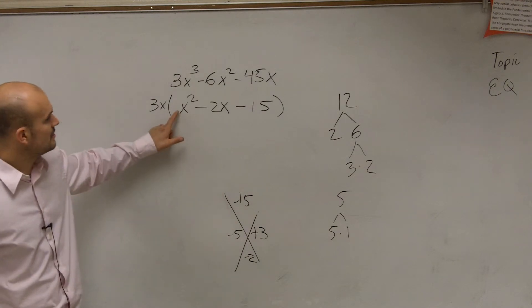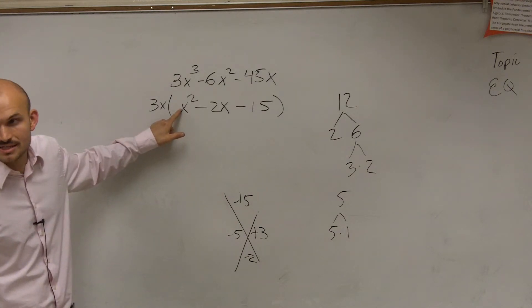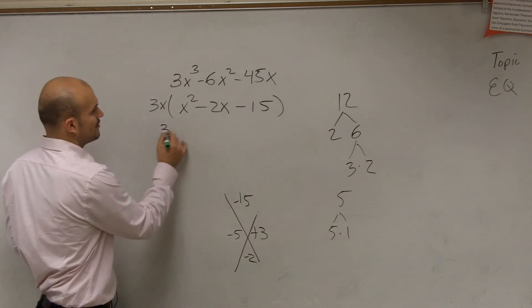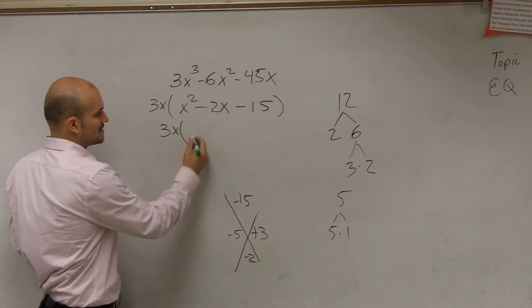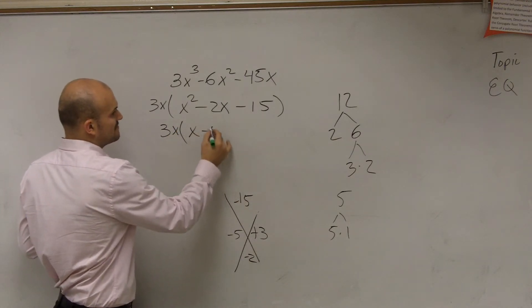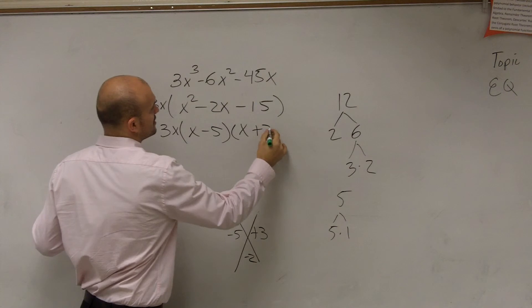There we go. And since my coefficient of x is 1, I can rewrite those simply as my two products. So I say x minus 5 times x plus 3.